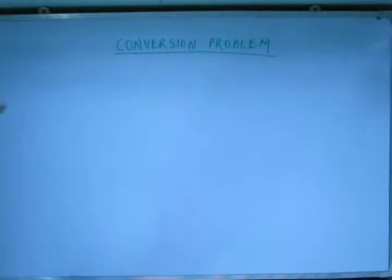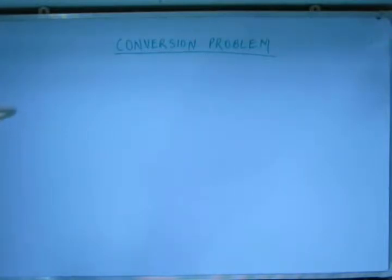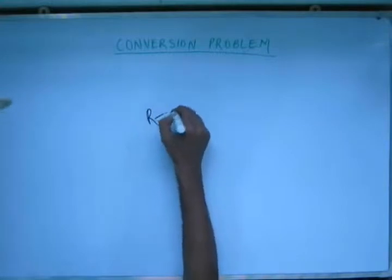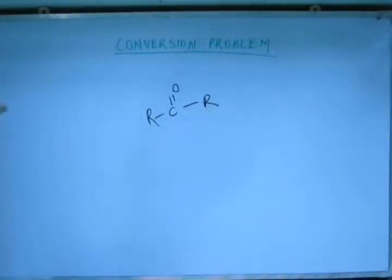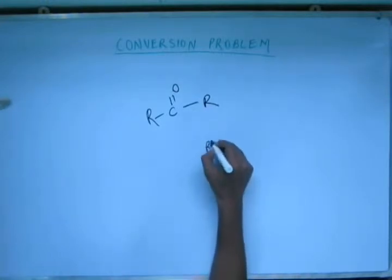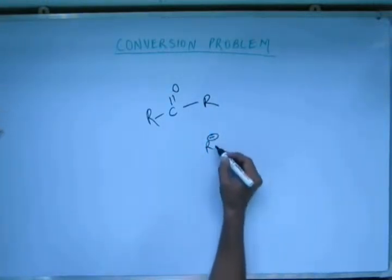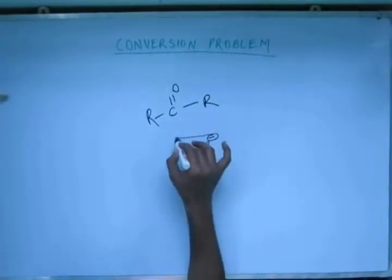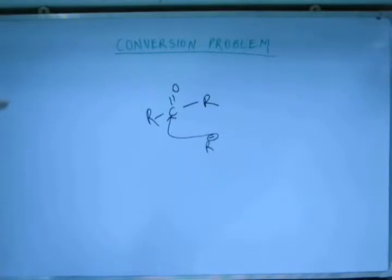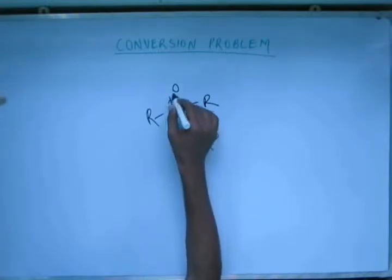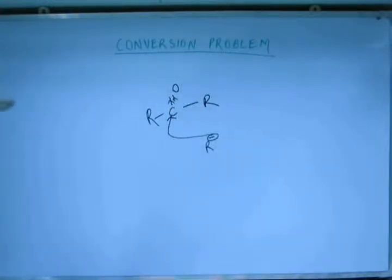Up till now we have studied Grignard reagent and seen most of its reactions. We have seen one of the reactions of Grignard reagent when it attacks a carbonyl group. This Grignard reagent has a negative charge on carbon, so it will attack the carbon of the carbonyl group because that carbon is electron deficient due to the shifting of electron density of the C=O bond towards oxygen, because of the greater electronegativity of oxygen.